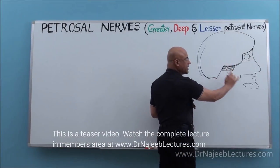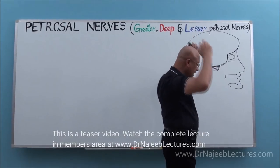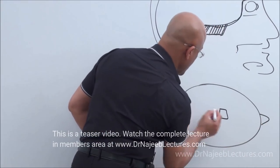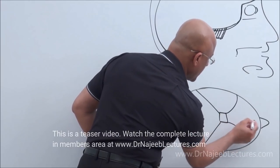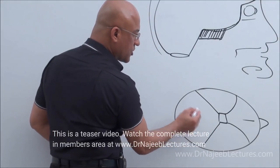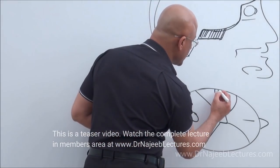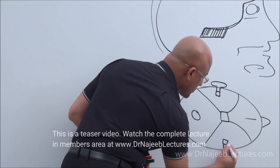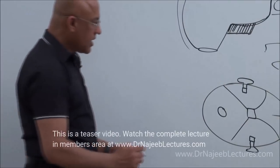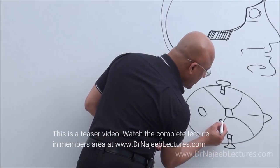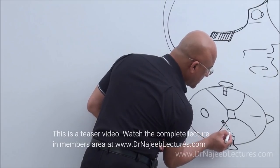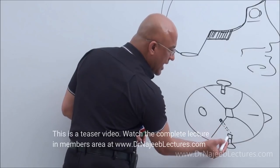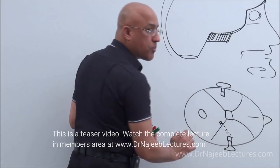I will also show this bone from the top as seen in the cranial cavity. Looking at the cranial cavity from the top: here is the anterior cranial fossa, middle cranial fossa, and posterior cranial fossa. Here is the middle ear and external acoustic canal. The internal acoustic meatus approaches the middle ear and passes through the petrous part of temporal bone. The middle ear cavity is embedded within the petrous part of temporal bone.